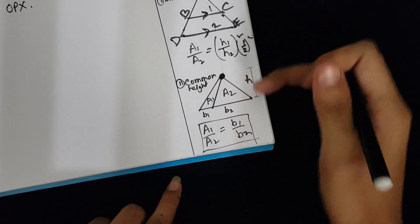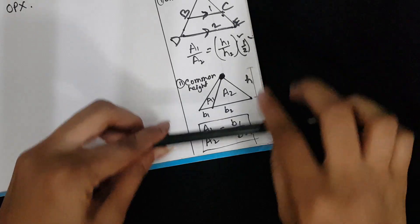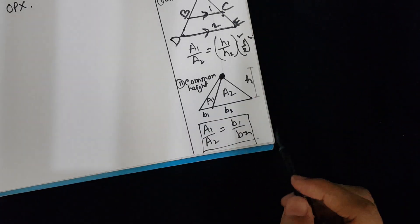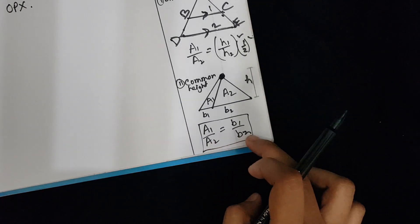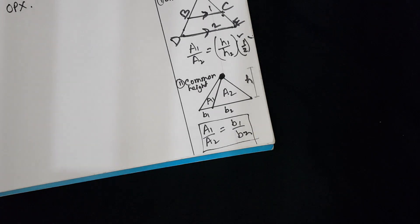The topmost point and the base of the triangle are at the same level. So for this case, A1 by A2 equals B1 by B2. That is, the area ratio will be directly equal to the base ratio. You do not need to take the square of the base ratios.